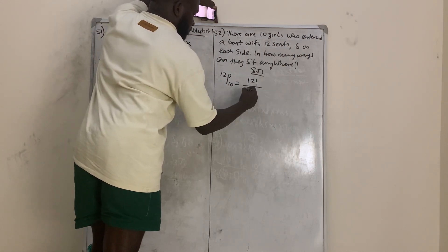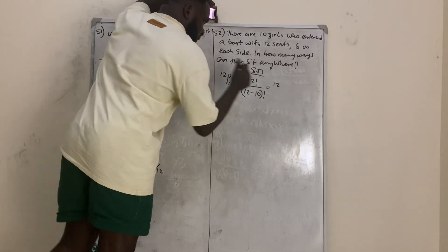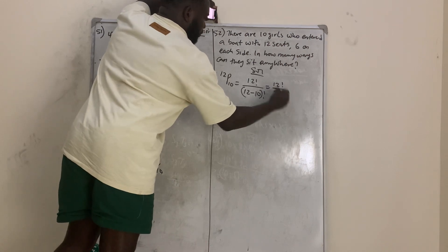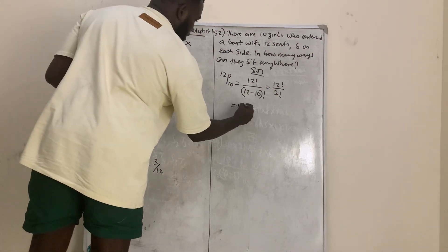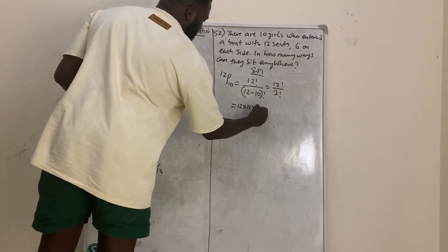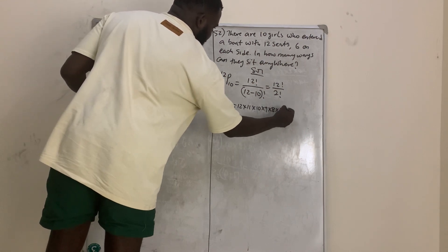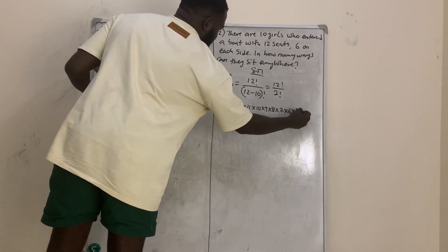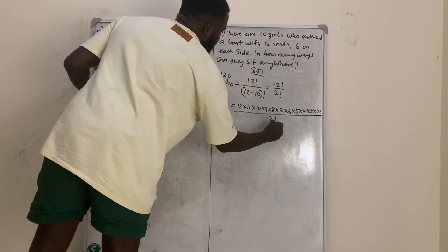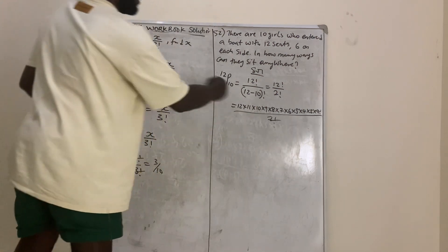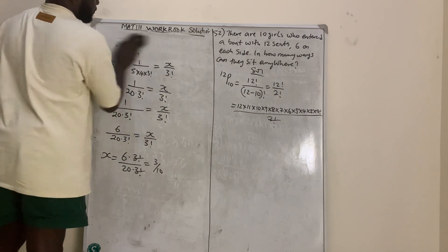12 permutation 10 equals 12 factorial over (12 minus 10) factorial, which is 12 factorial over 2 factorial. Now 12 factorial means 12 times 11 times 10 times 9 times 8 times 7 times 6 times 5 times 4 times 3 times 2 factorial, all over 2 factorial. Do this and get your final answer. We move to question number 53.